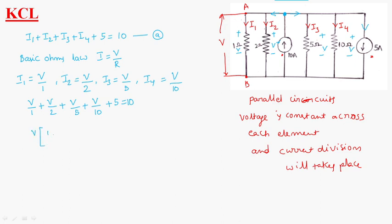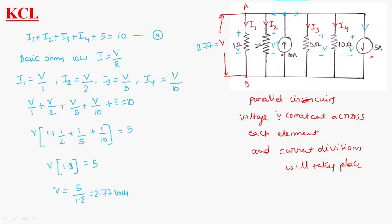Taking V as common: V times (1 plus 1/2 plus 1/5 plus 1/10) equals 10 minus 5, which is 5. This gives V times 1.8 equals 5. Therefore, V equals 5 divided by 1.8, which is equal to 2.77 volts.